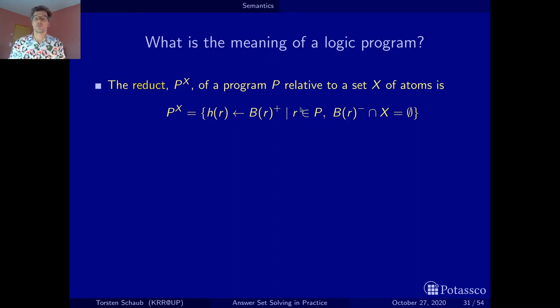We evaluate, we look at all rules, evaluate the negative body literals, and only if they are disjoint from X, we keep the rule, but only the rule with the positive body literals. And what we get then is a positive logic program.